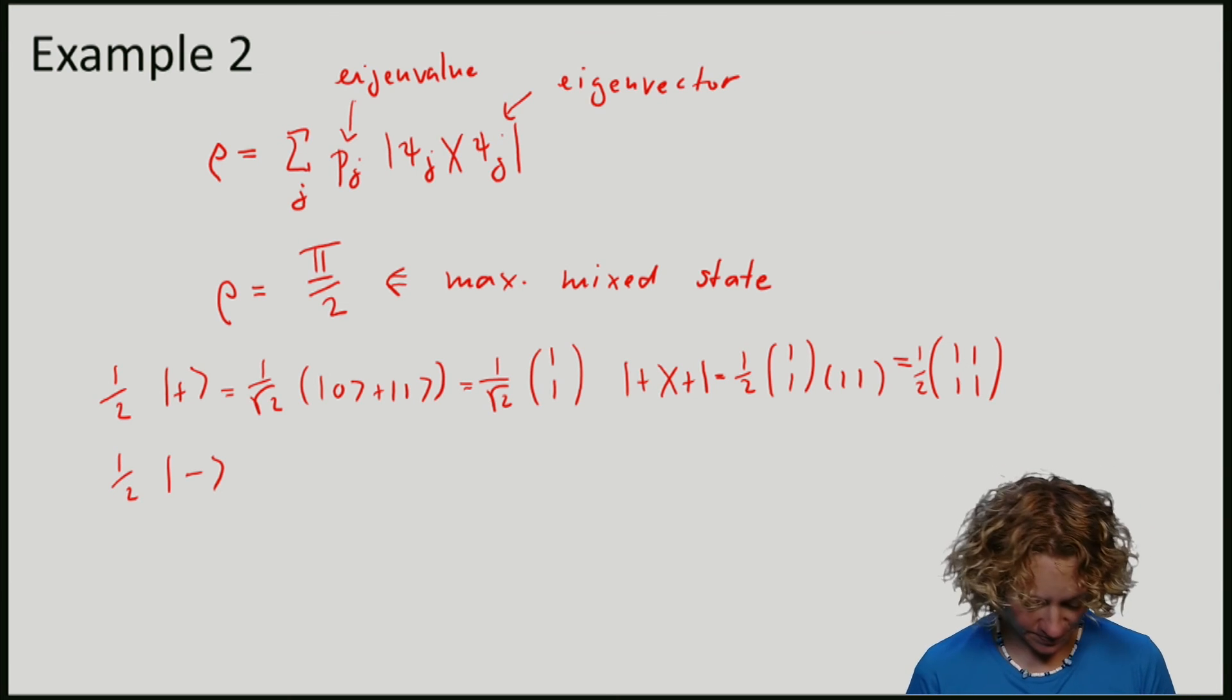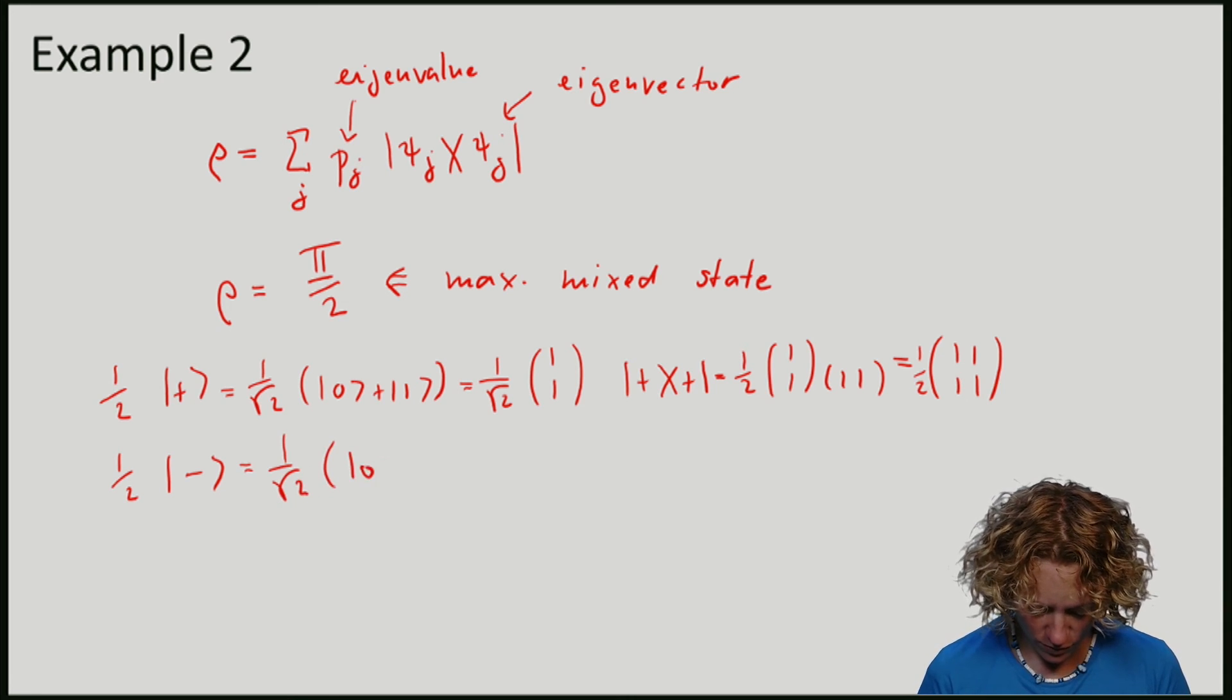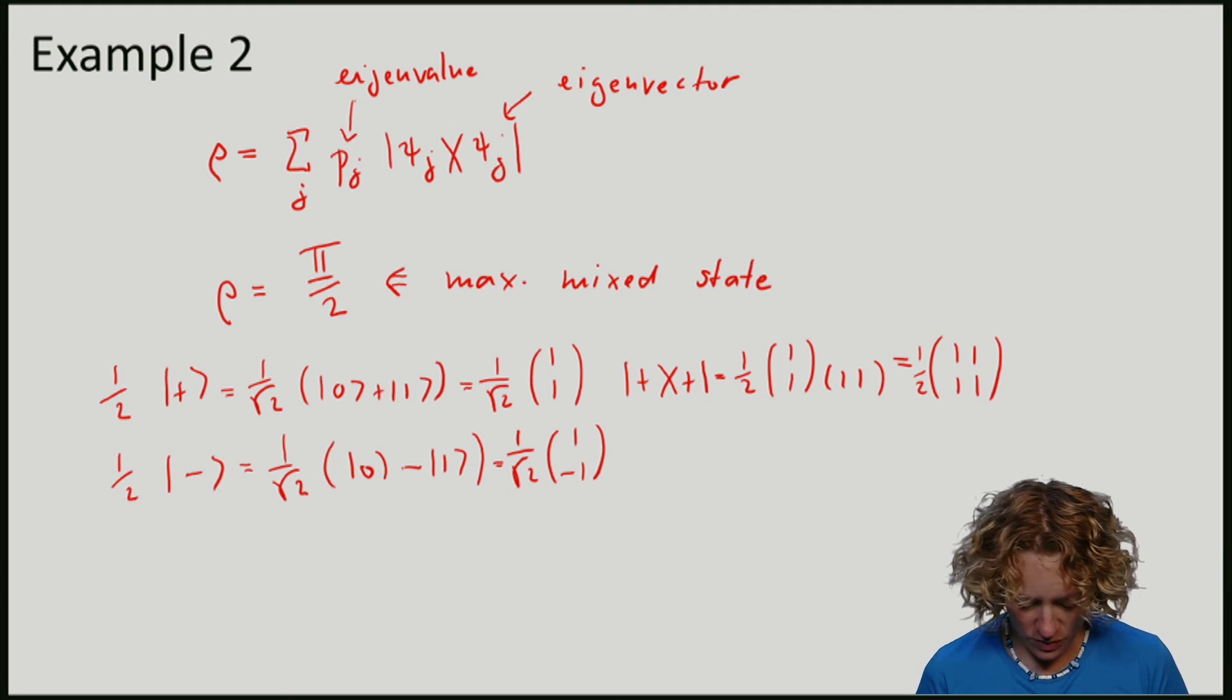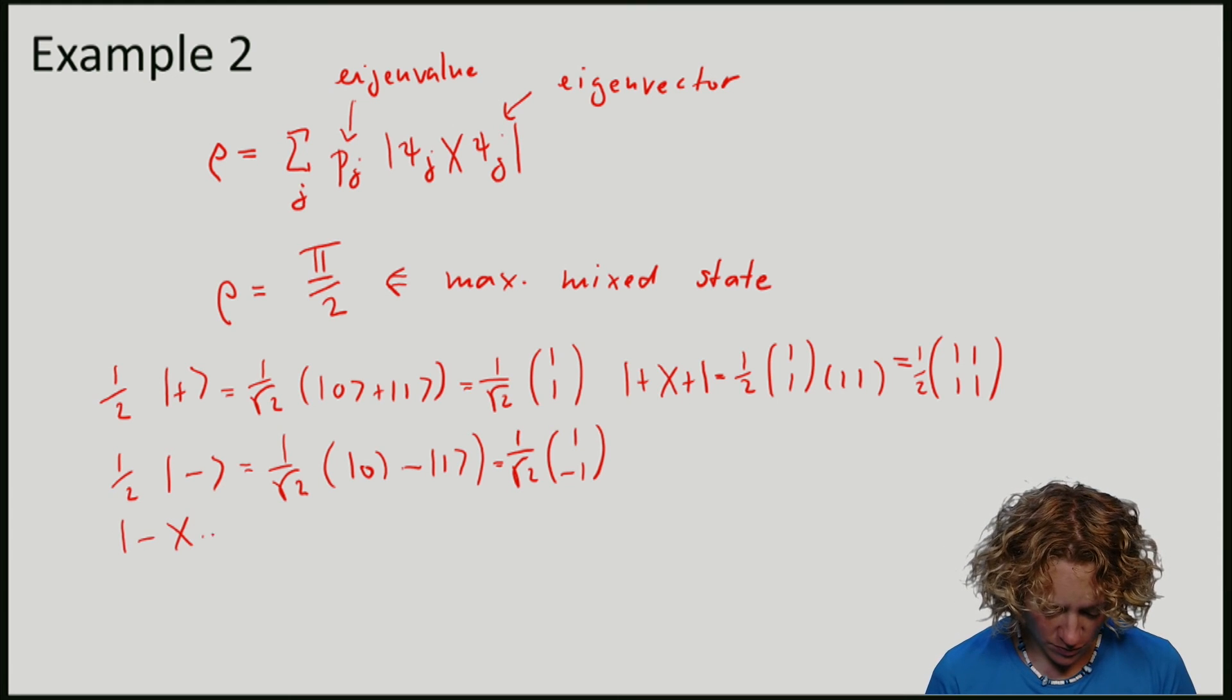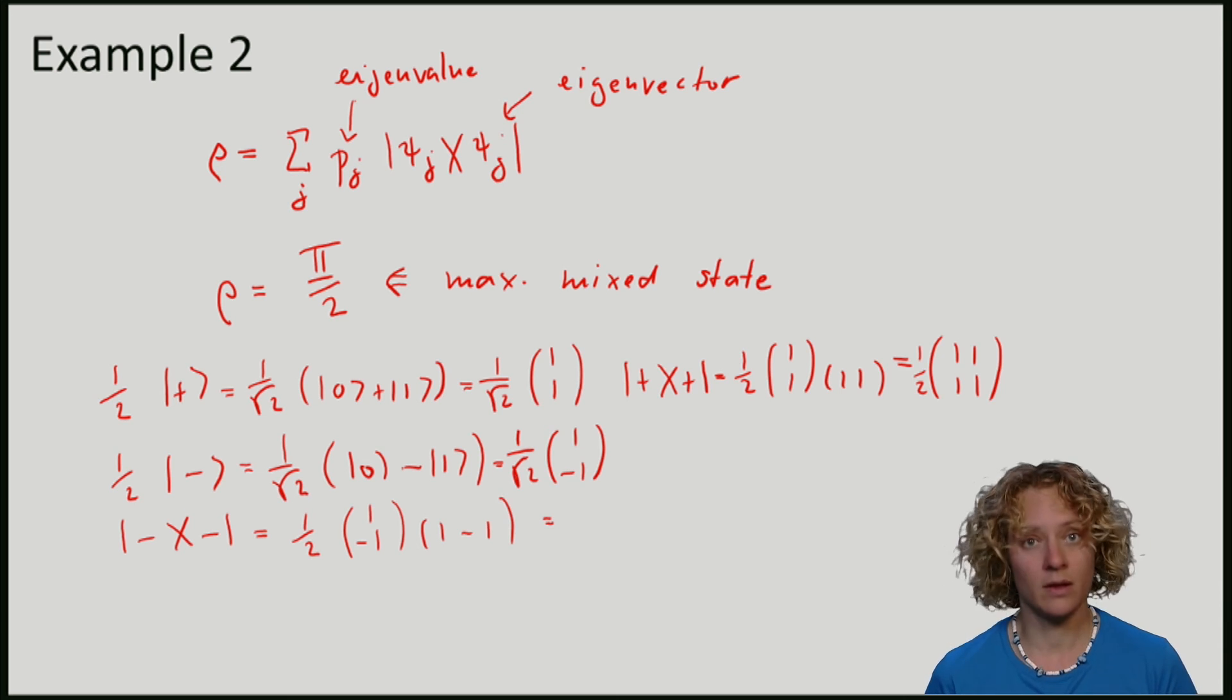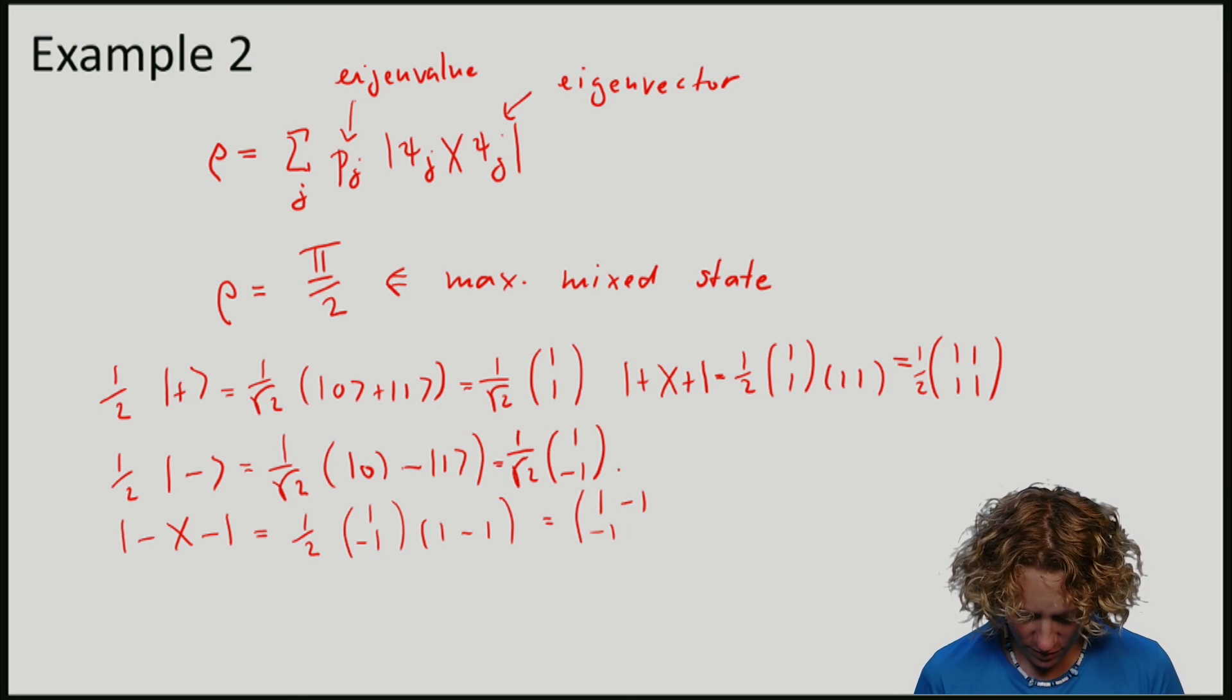Let's do this for minus, 1 over square root 2 times (1, minus 1). So if I compute the density matrix from |−⟩, again I have a prefactor a half. I have (1, minus 1, minus 1, 1).